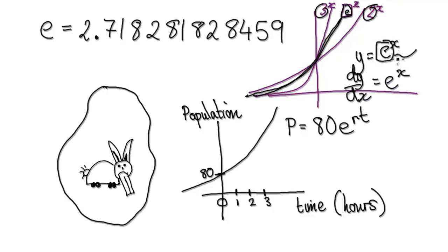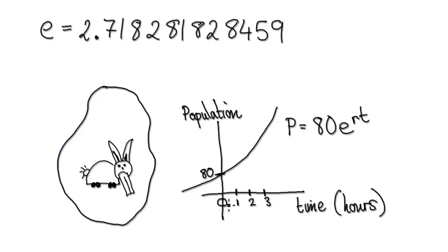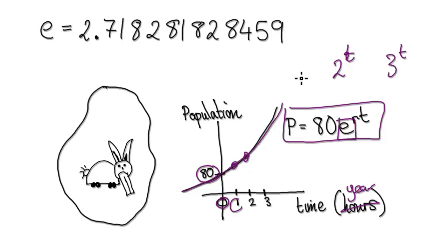We're going to try and understand why this number always occurs in nature. For example, let's say you've got an island with 80 rabbits. At time 0 there are 80 rabbits, and we use e to model the population growth as time ticks away — one year, two years, and so on. Why do we use base e? Why don't we use 2 to the power of whatever, or 3 to the power of whatever?